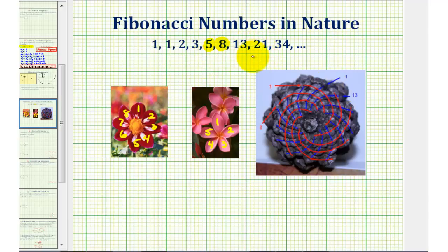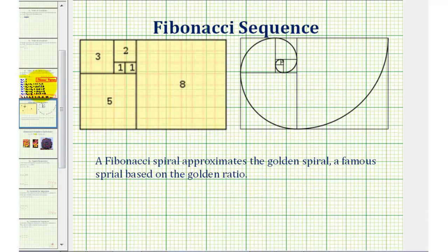Another reason the sequence is so famous is if we use the Fibonacci numbers to create squares, as we see here on the left, we can use these squares to approximate the golden spiral, as we see here, which is a very famous spiral based upon the golden ratio.